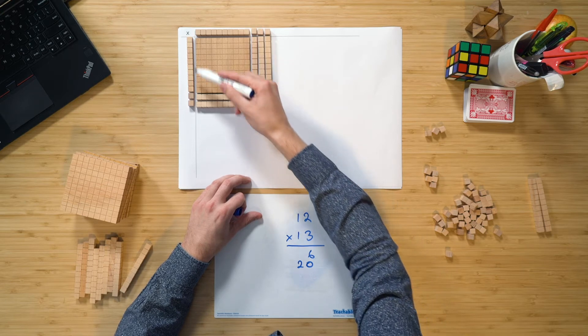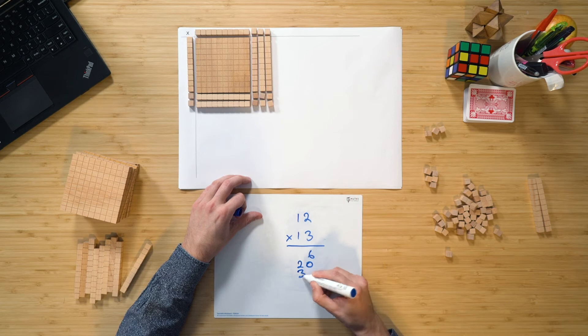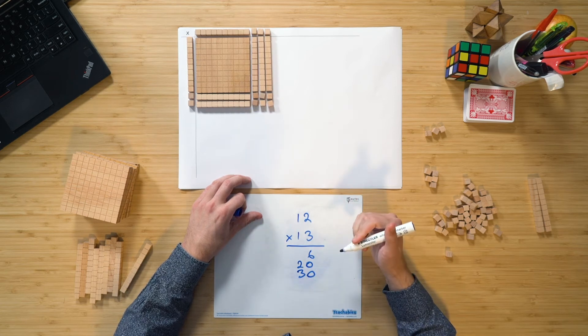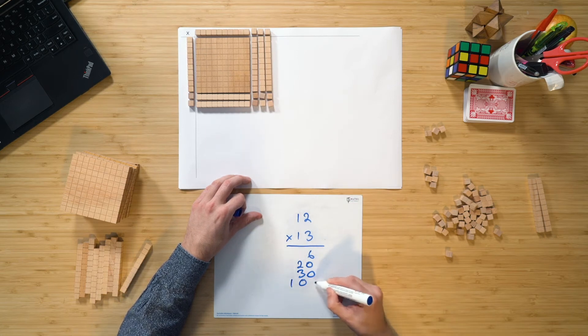And then we have a look at the 10 multiplied by the 3, which of course is going to give us 3 10s. So that's 30. And then finally, the largest piece, that is the 10 multiplied by the 10, which of course is 100.